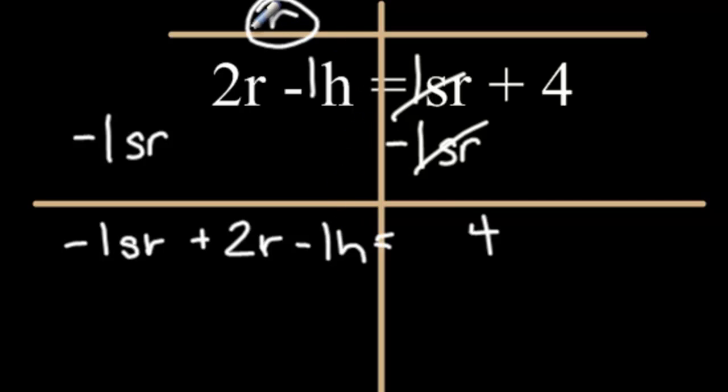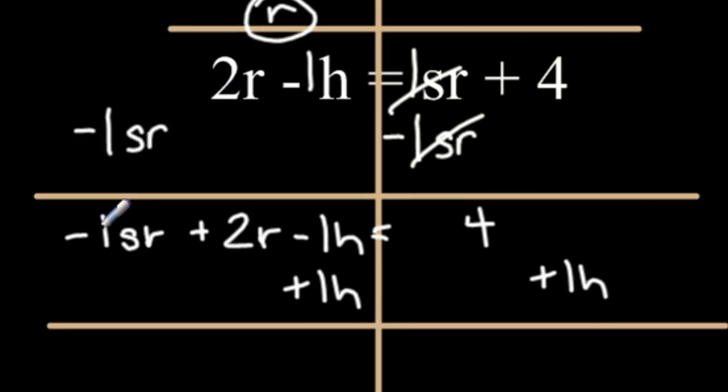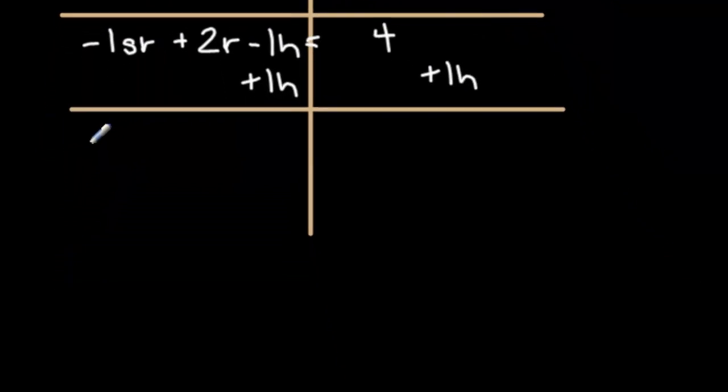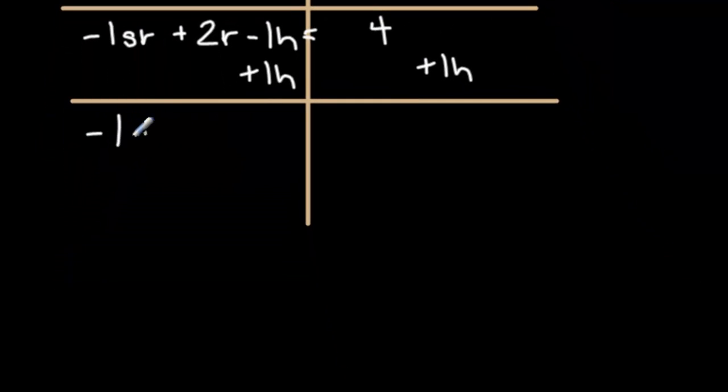If I only want terms of r on the left side, I'm going to want to get rid of this negative 1h by adding a 1h. Can I add a 1h to this 4? No you can't, they're not like terms. I'm just going to put that aside. And now let's calculate. Negative 1sr we didn't touch, that drops straight down. 2r we didn't touch, that drops straight down. Negative 1h, positive 1h, those cancel out. The 4 drops down, and the positive 1h drops down.